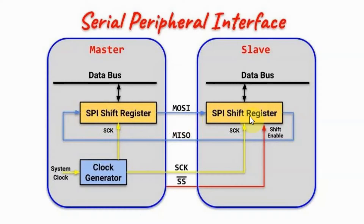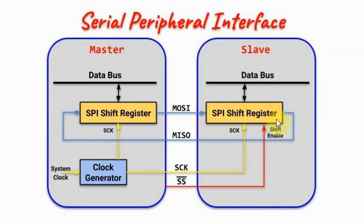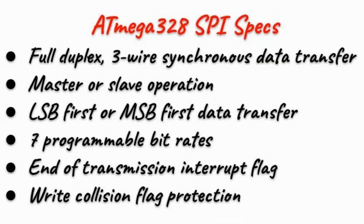Shift registers are used in both devices to transfer data between one device and another. These shift registers are powered by a clock generator that generates the clock signal needed to synchronize the communication between the two devices. The slave select signal generated by the master device is used to enable the slave device so that the slave will receive data from the master device. The SPI inside the ATmega328 is fully programmable and has the following specs.